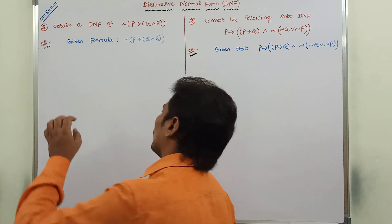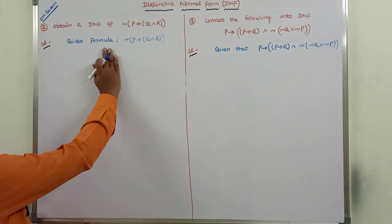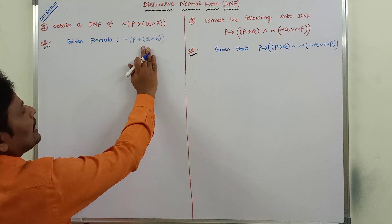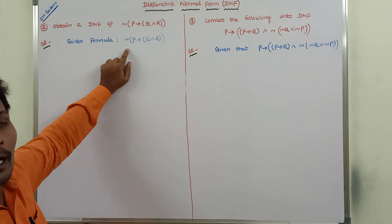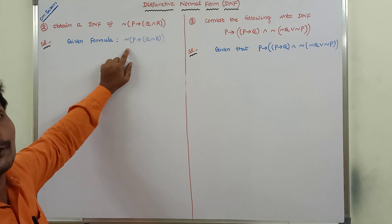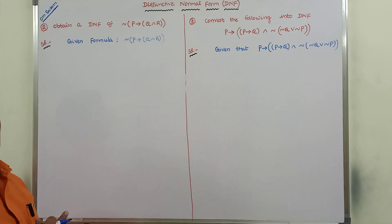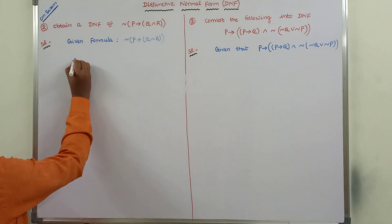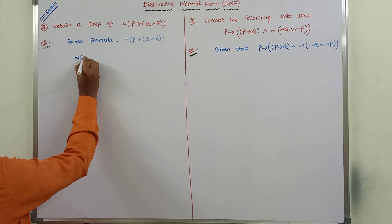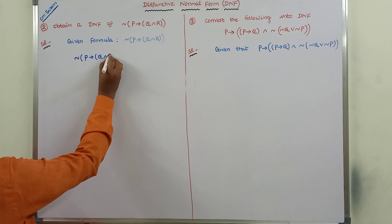Now we go to the example problem. The given formula is: negation of (P conditional (Q and R)). For this given formula, we have to find out the equivalent DNF using the three steps discussed in the previous video.